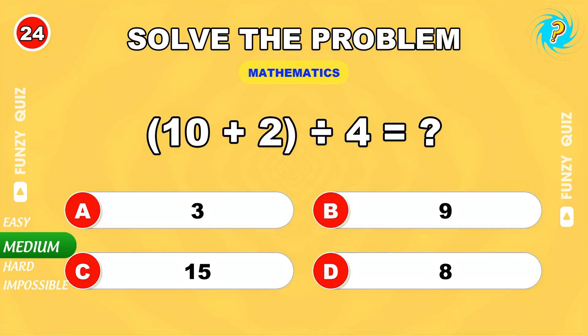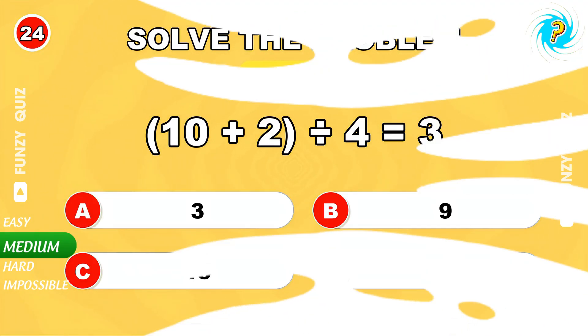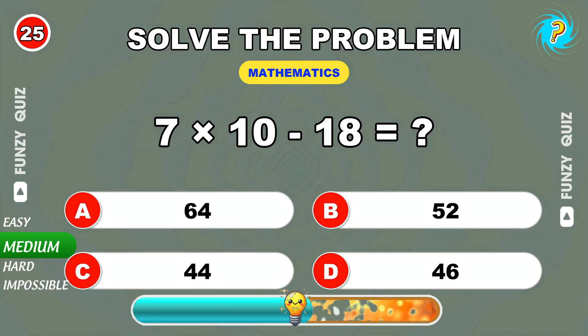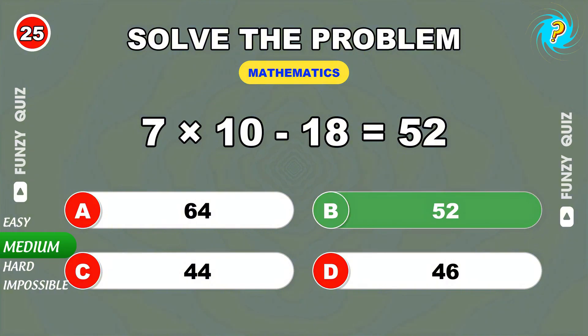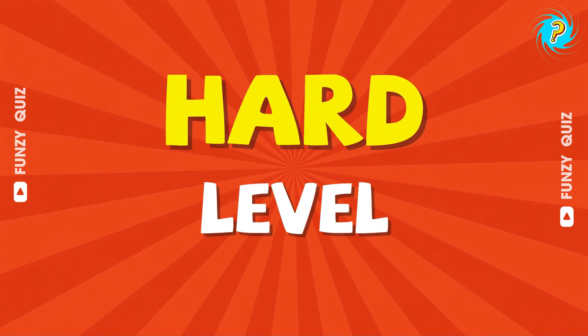10 plus 2 divided by 4. 3. Figure out 7 times 10 minus 18. 52. Fantastic. Feeling confident? Let's try the expert level.